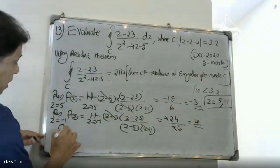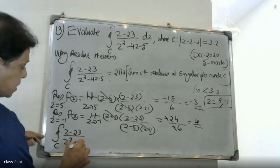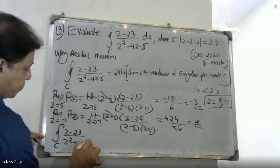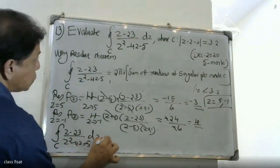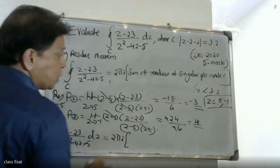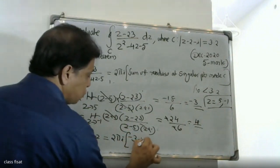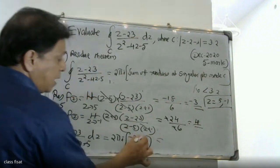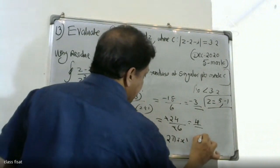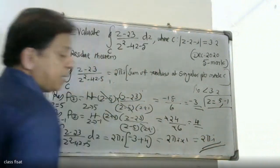Therefore, the integral ∮_C (z - 23) / (z² - 4z + 5) dz = 2πi × (sum of residues) = 2πi × (-3 + 4) = 2πi × 1 = 2πi. The answer is 2πi.